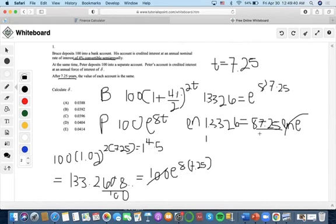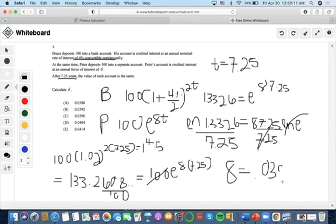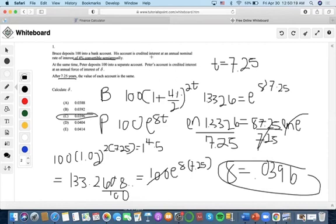Now we just divide 7.25 by both sides to get delta. So we use the calculator. We do ln on 1.3326 which is 0.28713, something like that, divided by 7.25. And we end up getting delta equal to 0.0396, which is choice C.